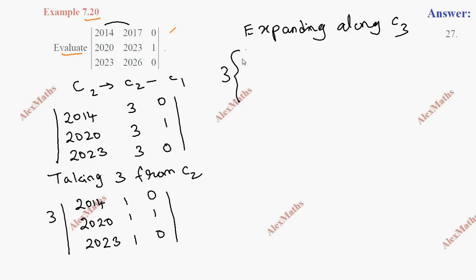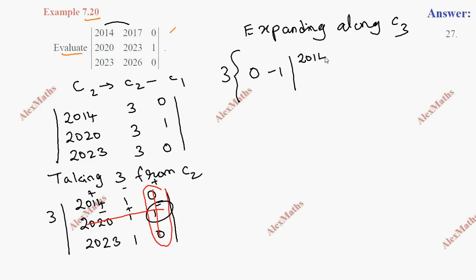Column 3 is equal to the co-factor. The first element is 0, so the co-factor uses the sign convention: minus, plus, minus. So this equals minus 1 times the determinant — opening one row and one column — the 2×2 determinant balance is: 2014, 2023, and 1; lastly 0 equals 0. So the balance is equal to 3.